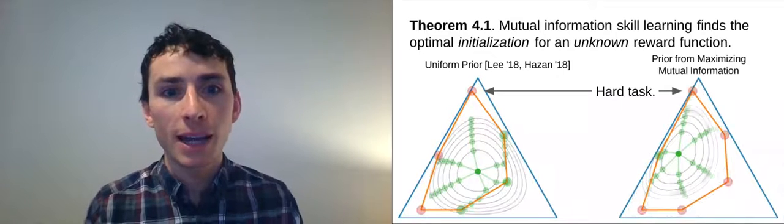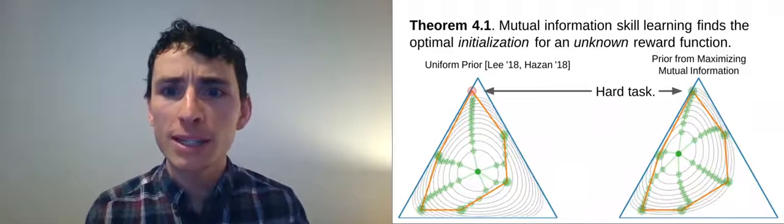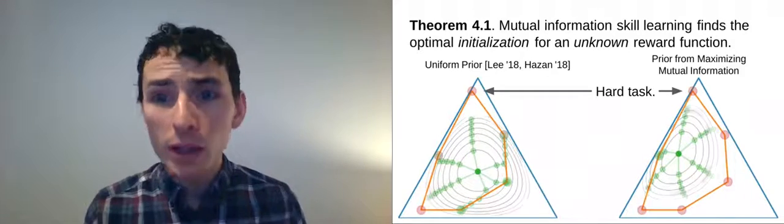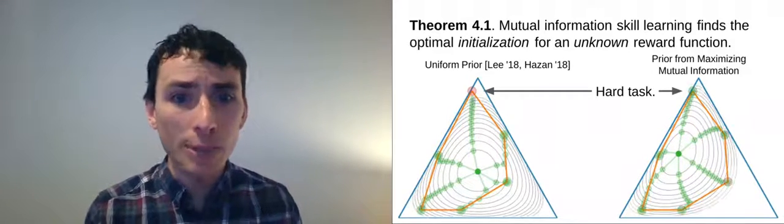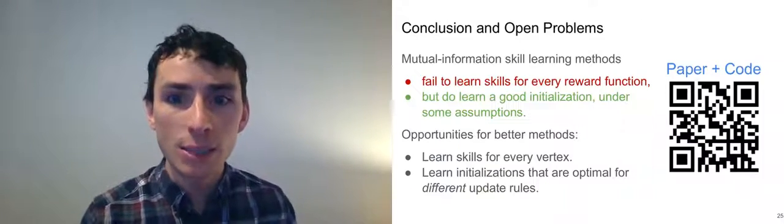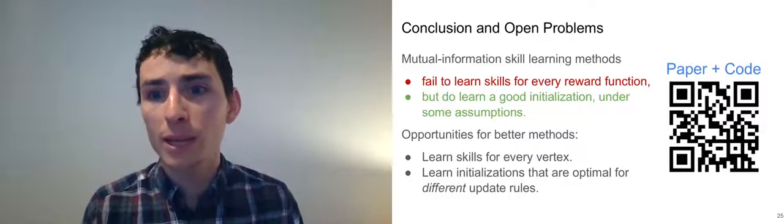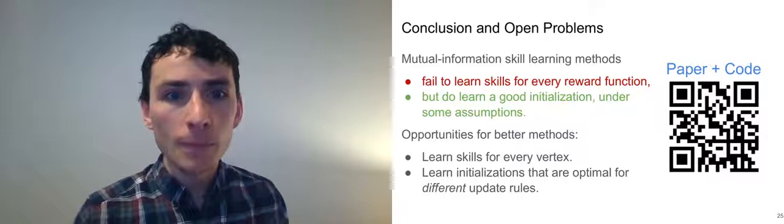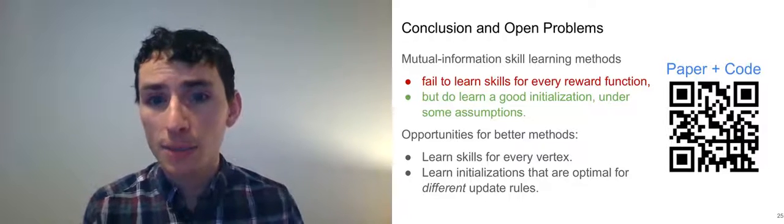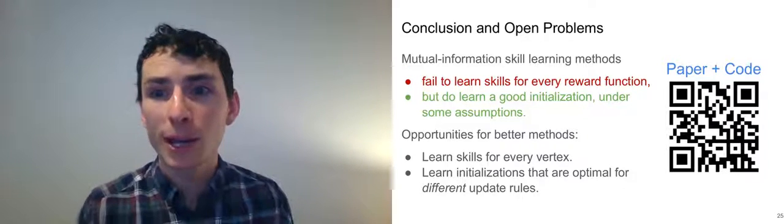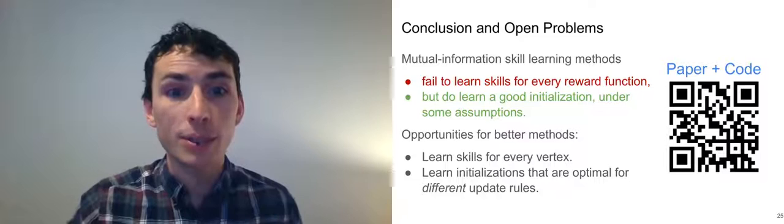Formally, we proved that skill learning using mutual information will always find the optimal prior. That is, maximizing mutual information corresponds to finding a prior that's closest to the hardest task. As noted before, the learning procedure visualized here is very idealized. Real RL algorithms take gradient steps in parameter space or in action space, not in state space. So, while current mutual information algorithms are optimized for this idealized learning procedure, other yet to be invented skill learning algorithms might be better for more realistic learning procedures.